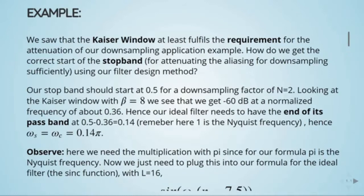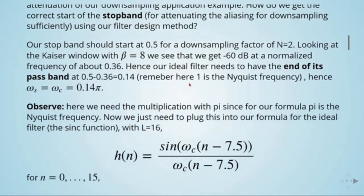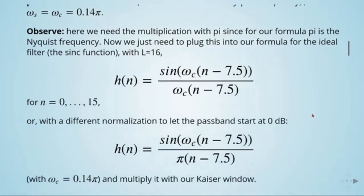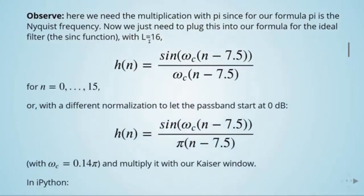Observe here we need the multiplication with pi since for our formula pi is the Nyquist frequency. Now, we just need to plug this into our formula for the ideal filter, the sinc function, with L equals 16. So here we have our formula and we will plug in 0.14 pi. We are using L equals 16, so we have 7.5 here. Or we can have a different formulation with normalization to let the pass band start at 0 dB. So we have this formula here, where omega_c should be equal to 0.14 pi, and then we multiply it with our Kaiser window.